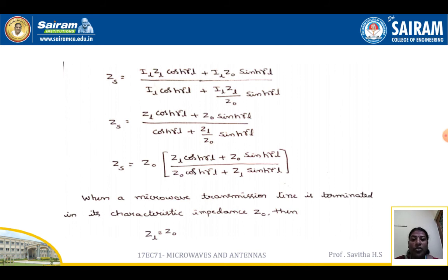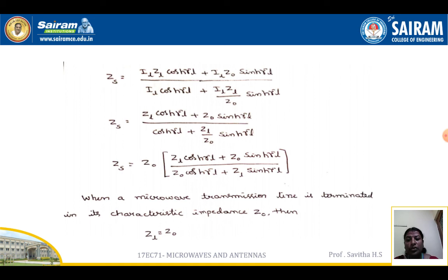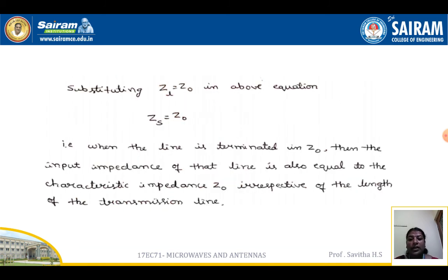When a microwave transmission line is terminated in its characteristic impedance Z₀, we substitute ZL = Z₀ into the equation. The numerator and denominator terms cancel, and finally we get Zs equal to Z₀. That is, when the line is terminated in Z₀, the input impedance equals Z₀ irrespective of the length of the transmission line.